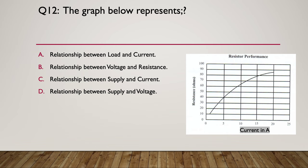Question 12, the graph below represents what? A, the relationship between load and current. B, the relationship between voltage and resistance. C, the relationship between supply and current. Or D, the relationship between supply and voltage. Here's your hint, again, draw a simple circuit and label it. So the answer is A, the graph is the relationship between load and current. So the resistance is the load and the amps across the bottom is the current. So it's the relationship between load and current.